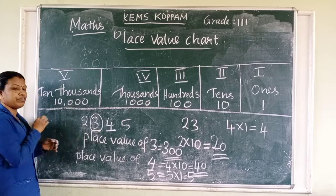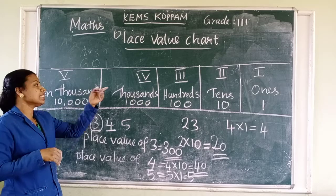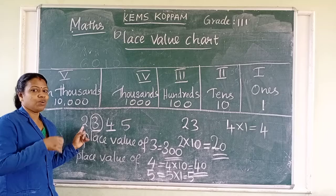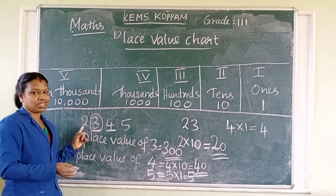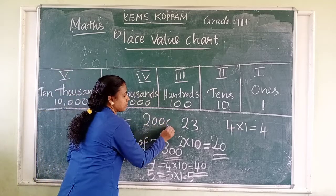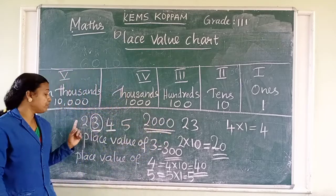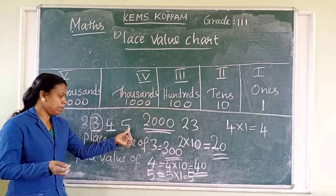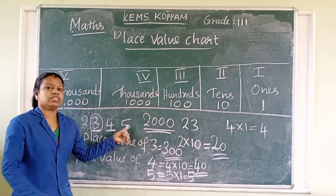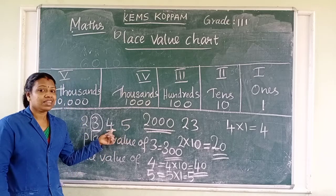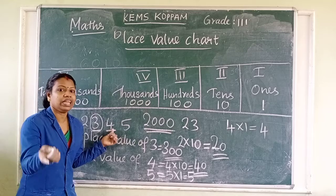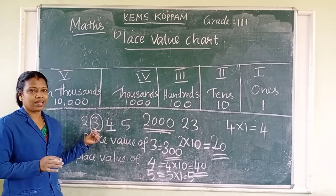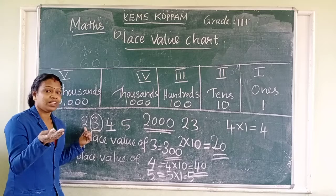What about the place value of two? Two is in the thousands place, so the value is thousand and the number is two. Two into thousand equals two thousand. Two thousand is the place value of two. So: place value of five equals five, place value of four is forty, place value of three is three hundred, place value of two is two thousand.